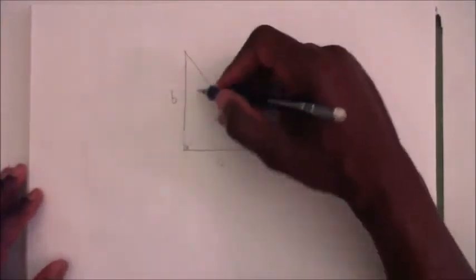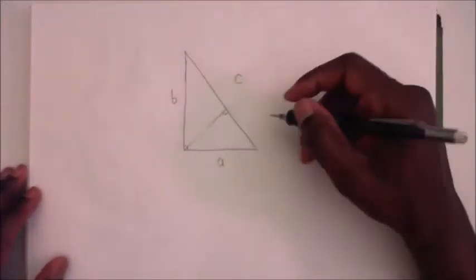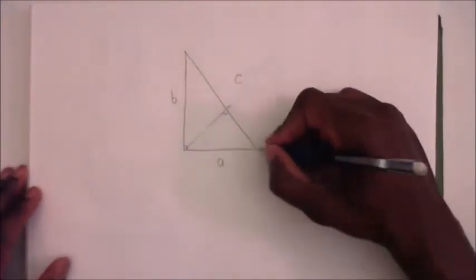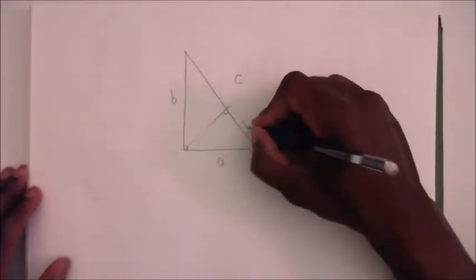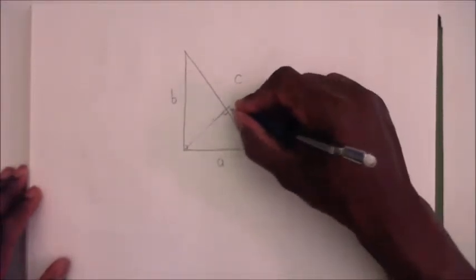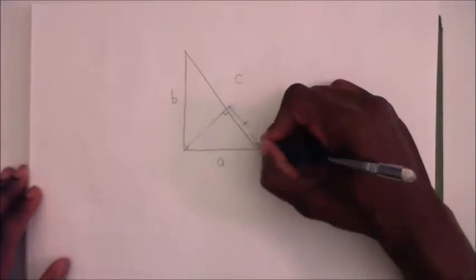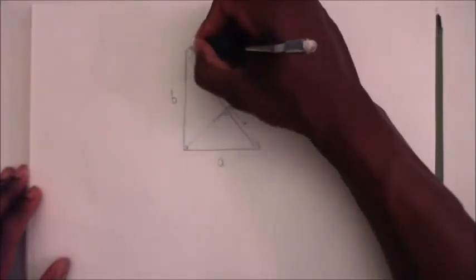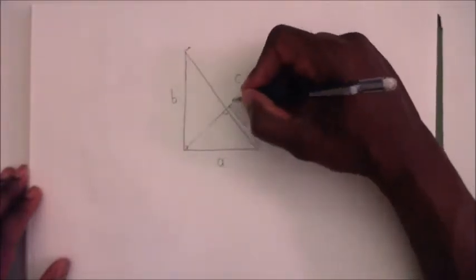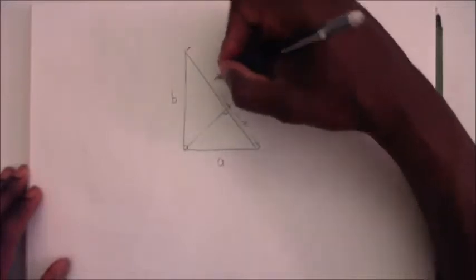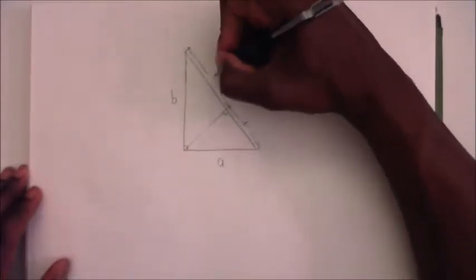So now after divided into two, we have this small right triangle, that right triangle, and the original. We'll call this side here of this smaller triangle X, and naturally this side here will be C minus X, since they both add up to being C.